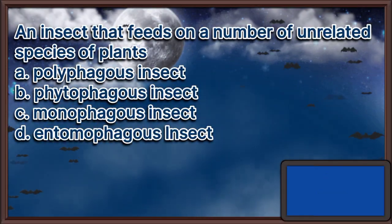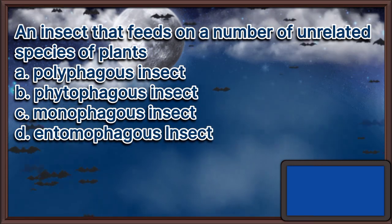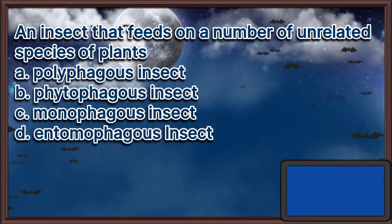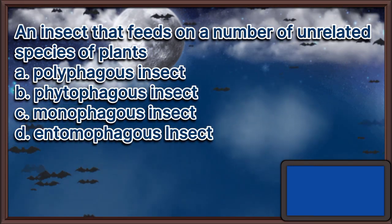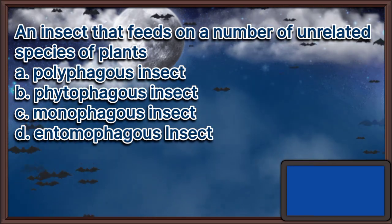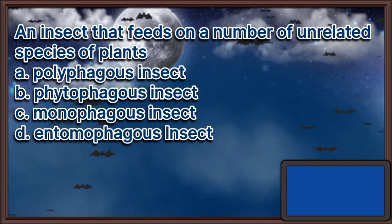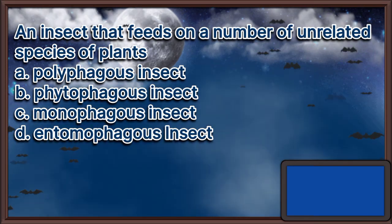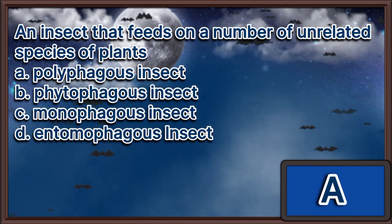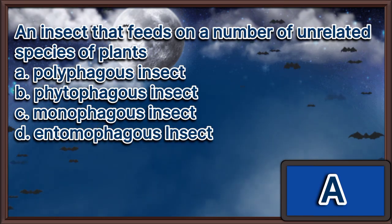An insect that feeds on a number of unrelated species of plants. A. Polyphagous insect. B. Phytophagous insect. C. Monophagous insect. D. Entomophagous insect. The answer is letter A.